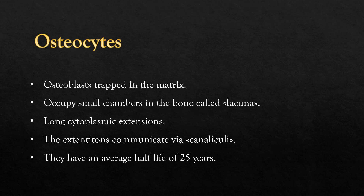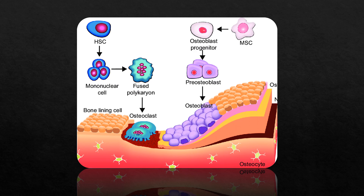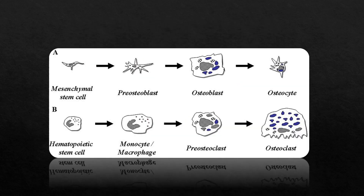Osteocytes are simply osteoblasts trapped in the matrix that they secreted. They occupy small chambers in the bone called lacunae. They are networked to each other via long cytoplasmic extensions that communicate via long tiny channels called canaliculi. Osteocytes have reduced synthetic activity and are not capable of mitotic division. They have an average life of 25 years. It should also be noted that osteoblasts transform to osteocytes, which are the proper bone cells, and if needed, osteocytes may be re-transformed to osteoblasts to secrete bone again.